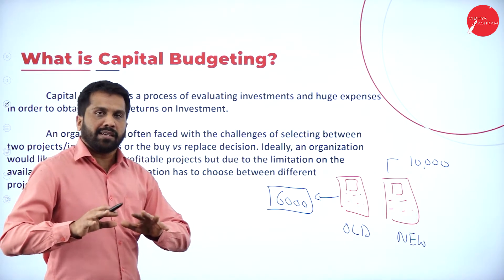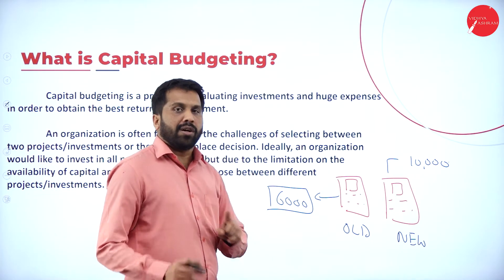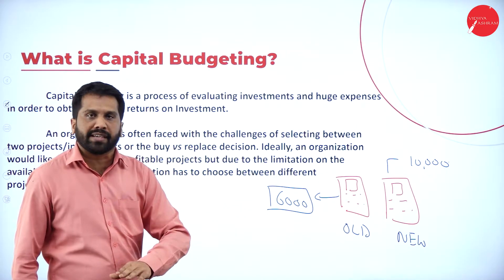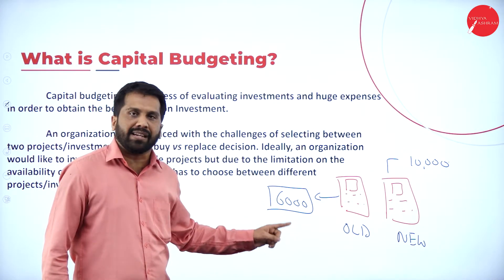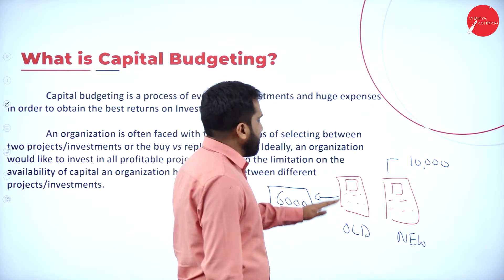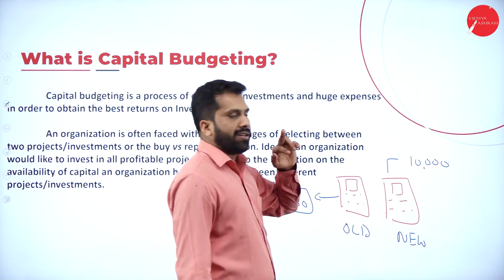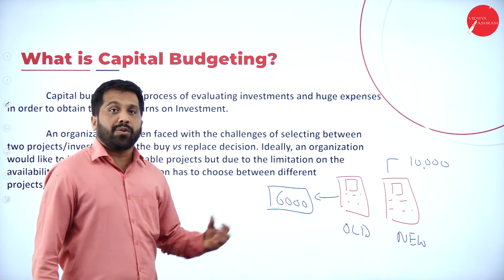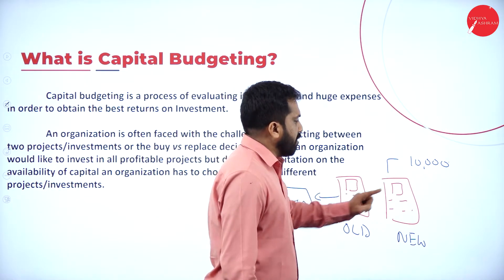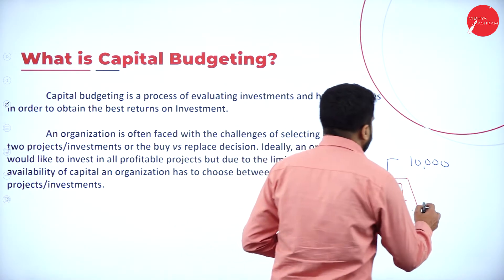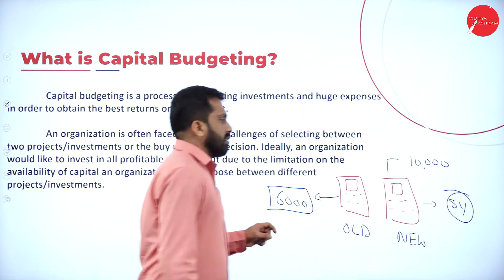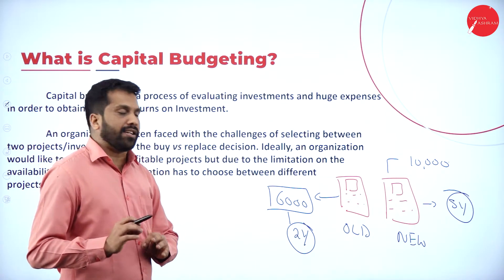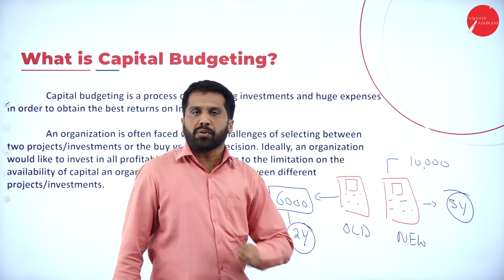So the question is: should you repair the old mobile for 6,000 or buy the new one for 10,000? The new mobile gives you 5 years of life, while the repaired old mobile gives only 2 years. You have to decide — should I go for the old or the new? That decision-making process is called capital budgeting.